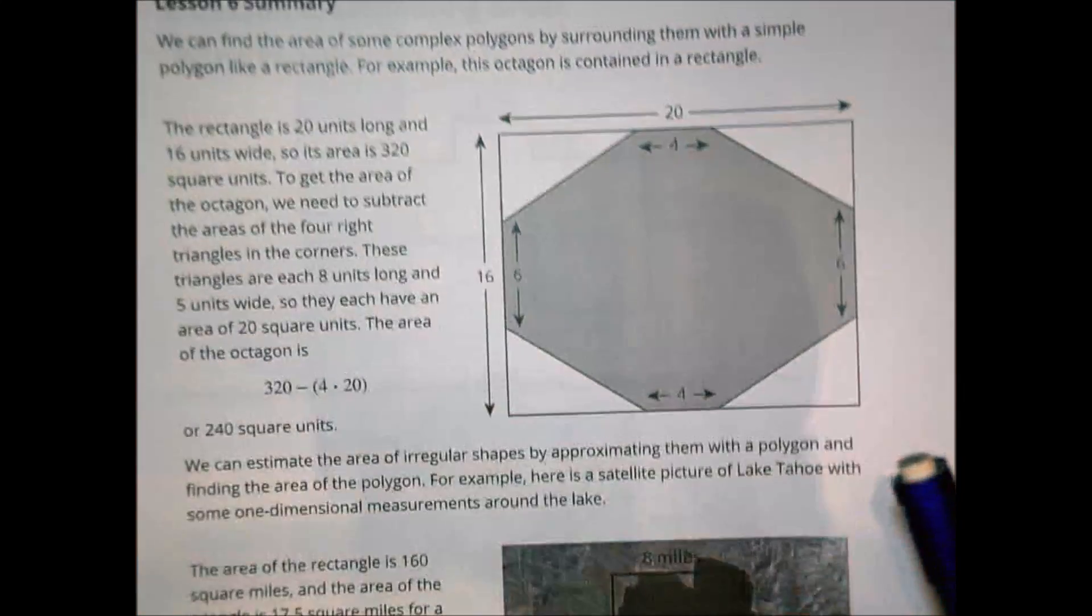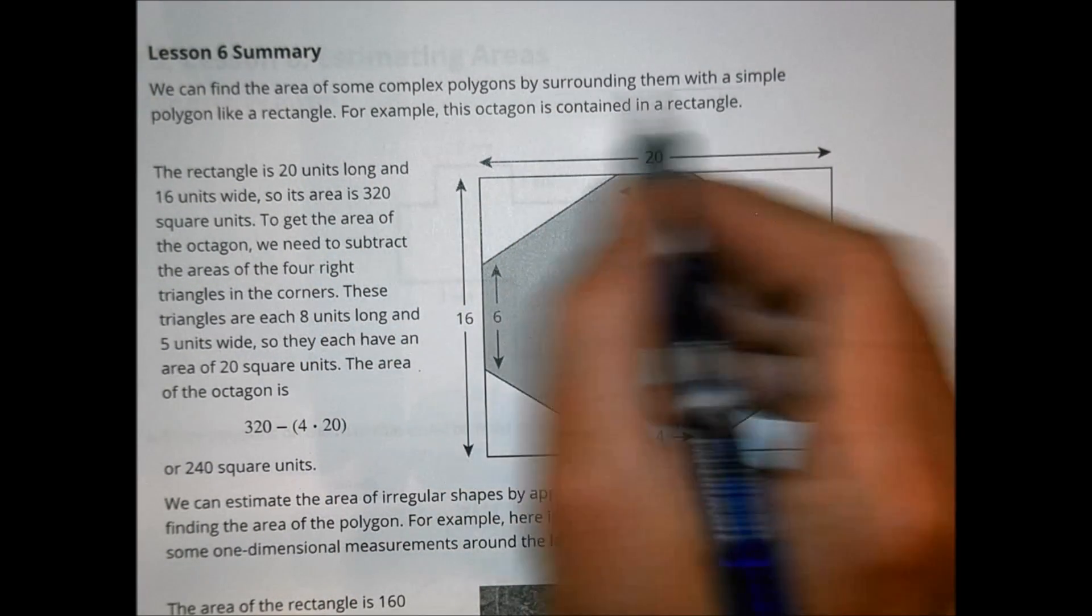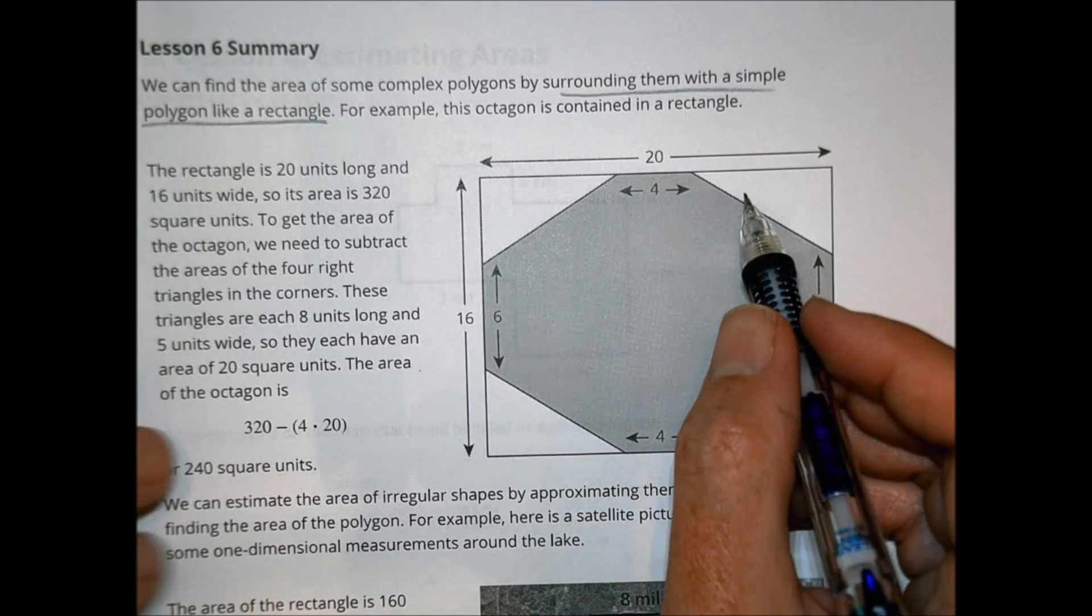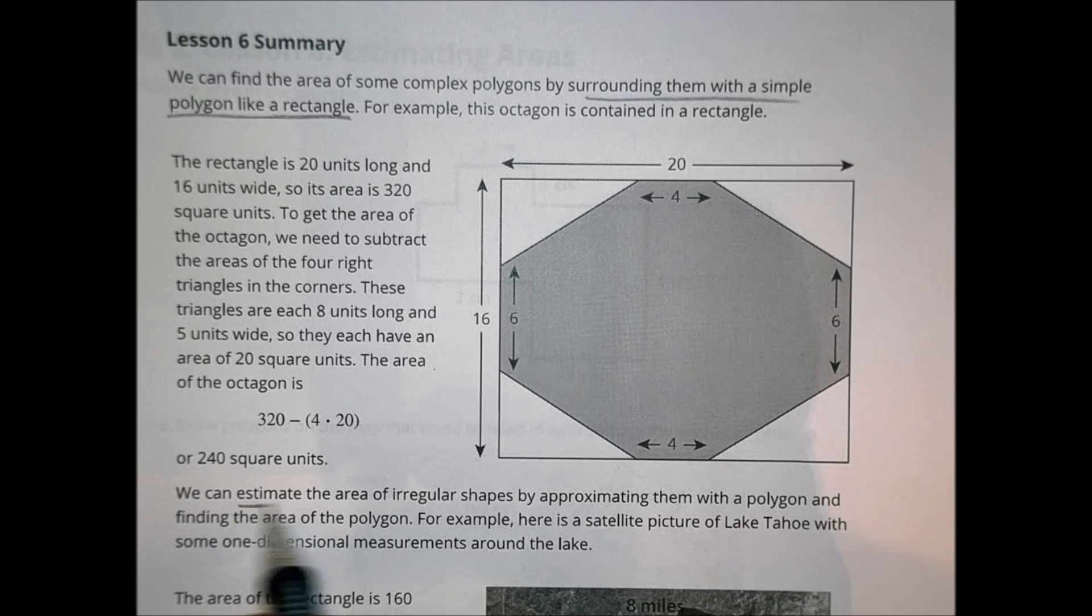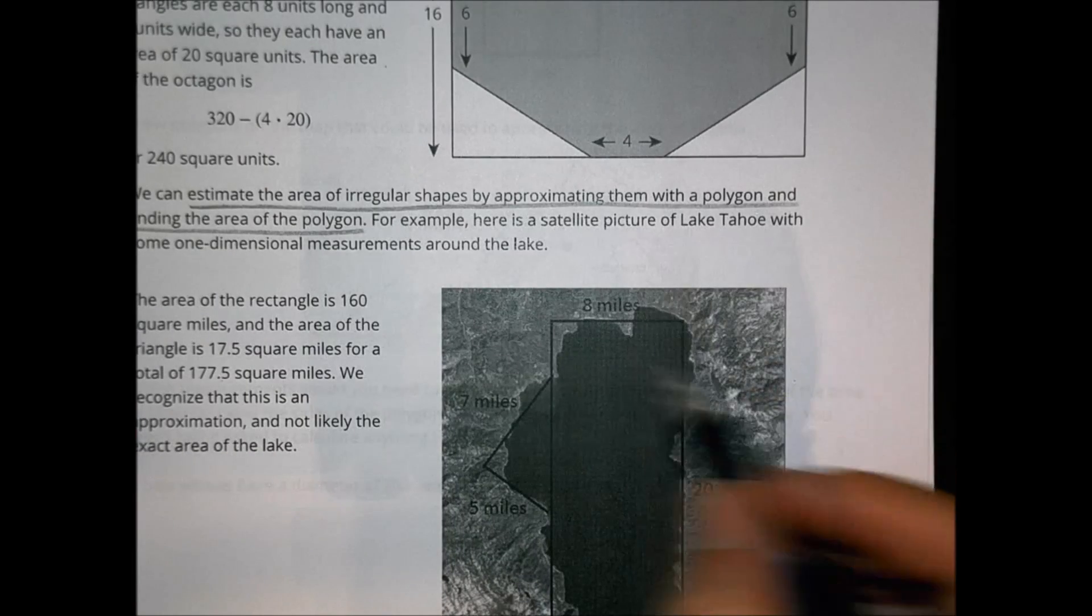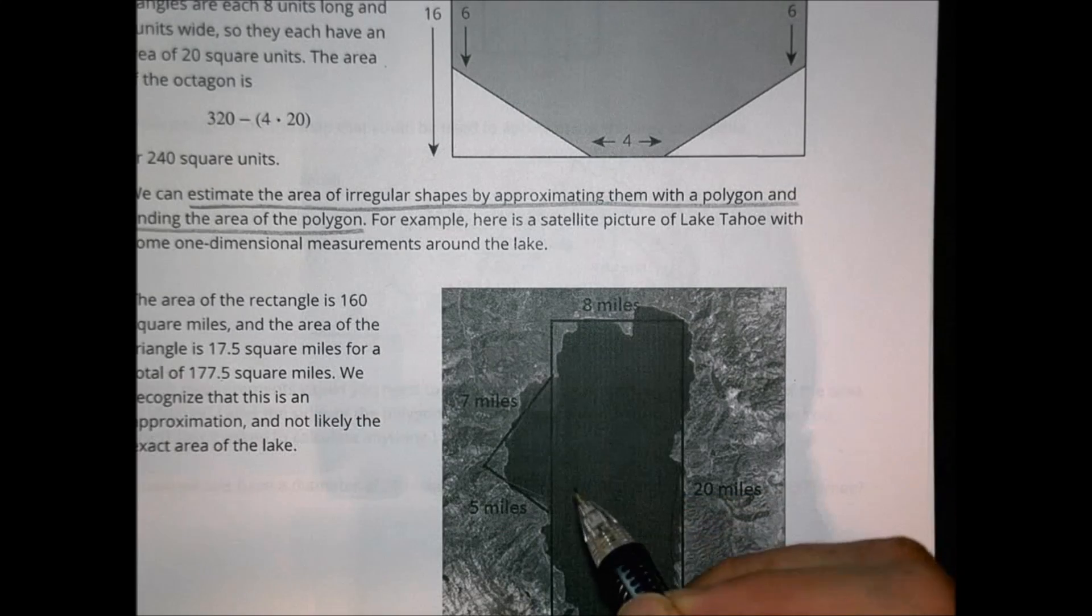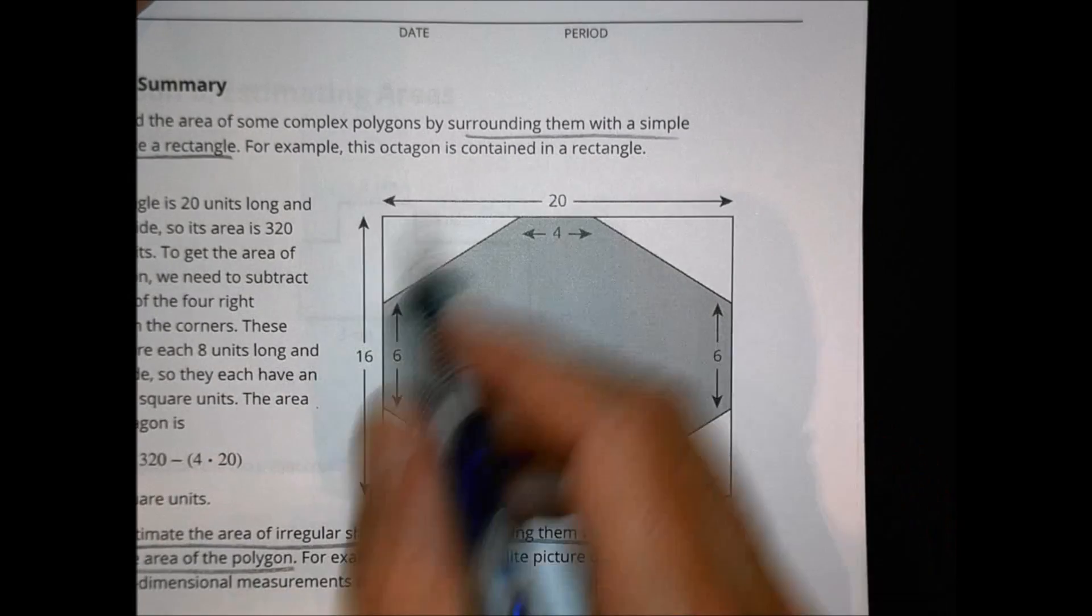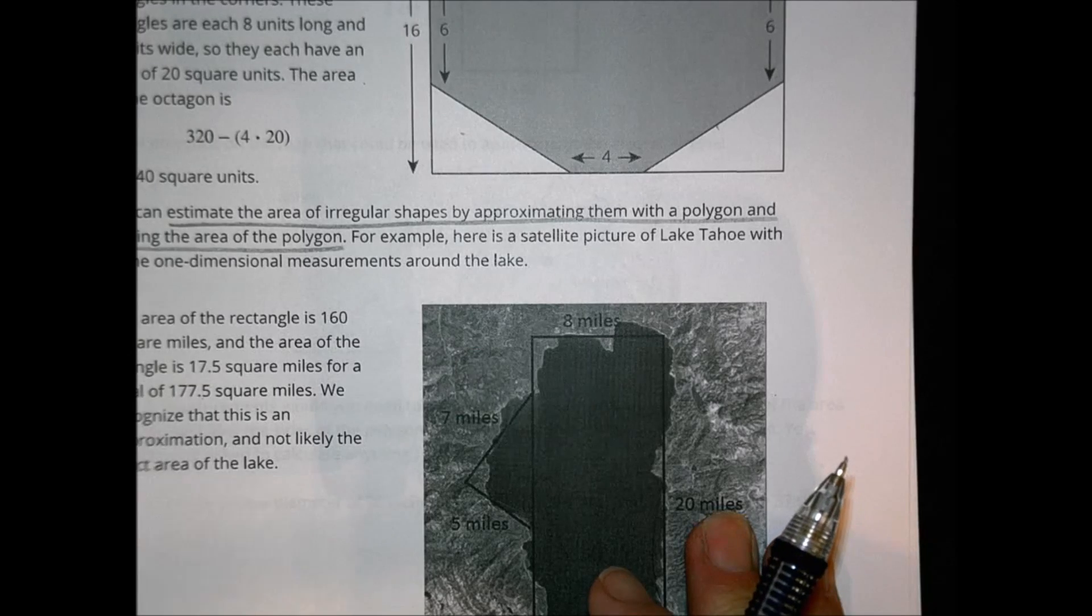Let's turn the page and look at our summary. Basically, here we go. It says we can find the area of some complex polygons by surrounding them with a simple polygon like a rectangle, like so. And then we can remove the corners or whatever piece it needs to be. So we can estimate the area of irregular shapes by approximating them with a polygon and find the area of the polygon. And that's the idea. We just get an idea of a shape like this and say, well, I don't know exactly what that area is going to be, but I have a rectangle and I have a triangle. I put that together. It's going to get me close. So you can surround it and then subtract what you're not going to keep. Or you can use some approximate shapes of polygons. You do know rectangles and triangles to be able to solve for some areas there.